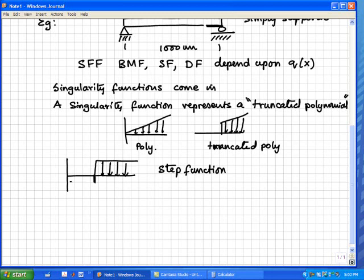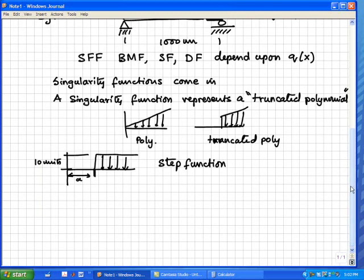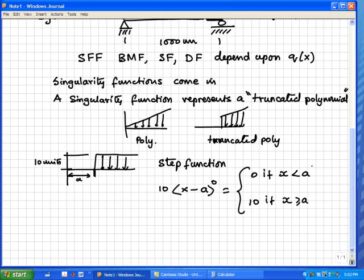And it begins at a and continues on. We want to have a nice representation for it. A representation for this looks like this: let us say the height of the step function is 10 units. Jump in value. The idea is the following: step function is represented as 10 times (x - a) to the power 0. This is the same as saying this is 0 if x is less than a, is equal to 10 if x is greater than a.